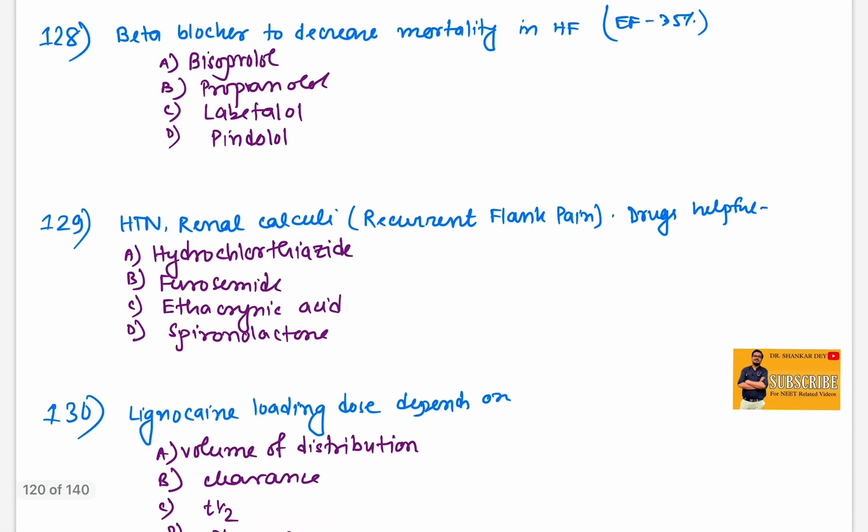Beta blocker to decrease mortality rate in heart failure with reduced ejection fraction. It is obviously bisoprolol. Cardioselective beta blockers like bisoprolol, carvedilol, metoprolol. Answer is bisoprolol.